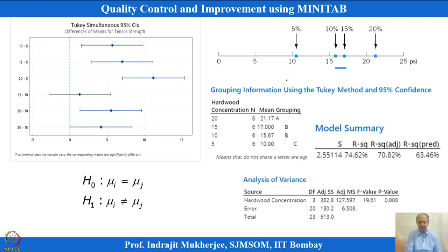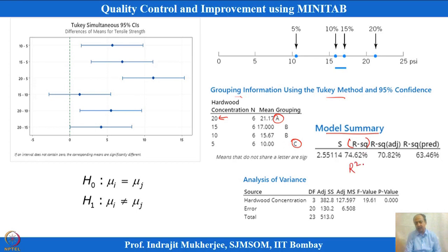From the analysis we gathered grouping information for the Tukey test. If the letter codes are different, that means those levels have significant mean differences. That is why we reached level 20. From the model summary, one important statistic is R-squared, which is SS treatment divided by SS total. This gives you the R-squared estimation.